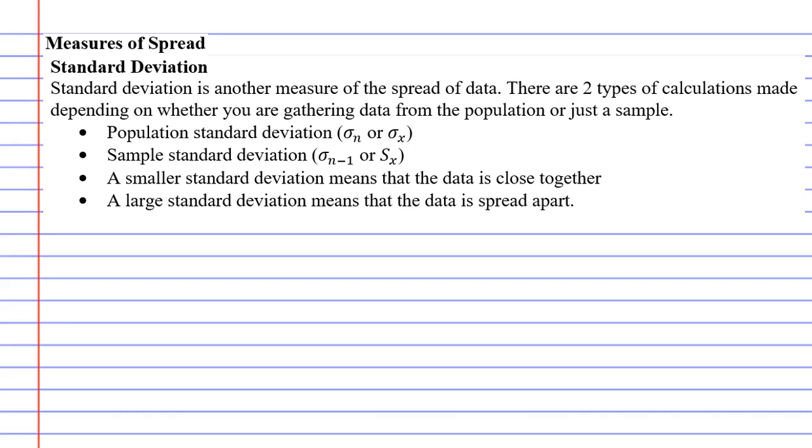This can still be quite tricky because every calculator does it differently. Just like range and interquartile range, a smaller standard deviation means the data is close together, and a large standard deviation means the data is spread apart.